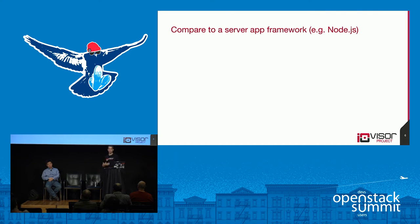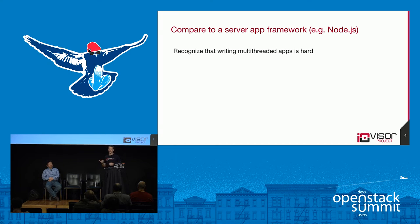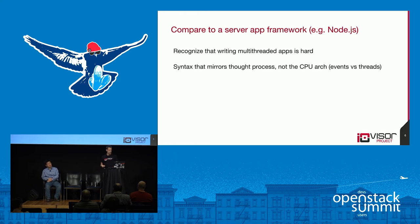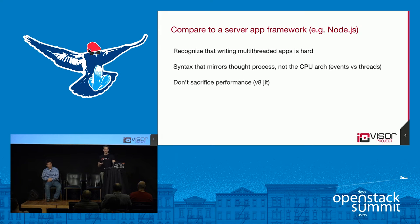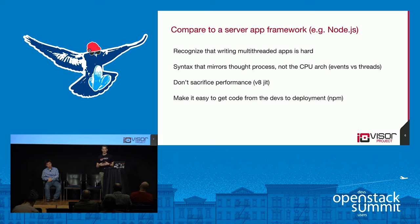We looked at different application frameworks that were successful to find guidance in how to build a new framework. Take Node.js, for instance. It starts by realizing that writing multi-threaded applications is hard. Node.js has a different approach that looks at the way events happen in those applications and tries to enable a more suitable syntax — but without sacrificing performance. You write in this expressive language, but V8, the compiler, has a nice translation into native code, and you get a community that publishes applications in a rapid cycle of development.